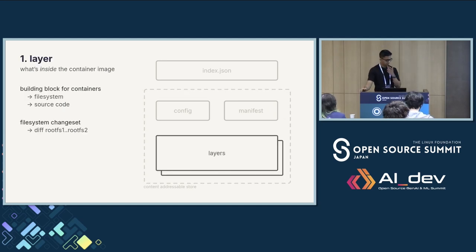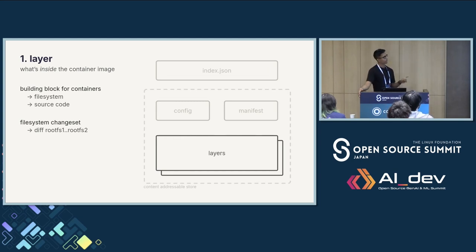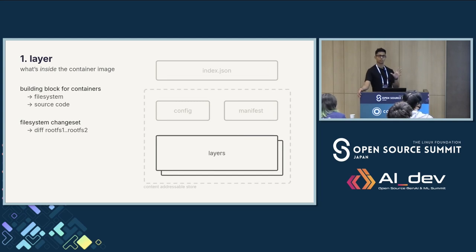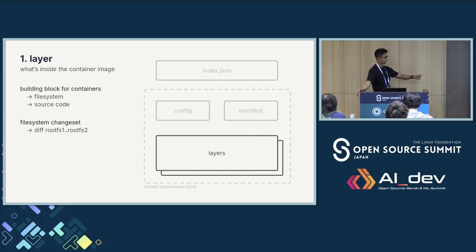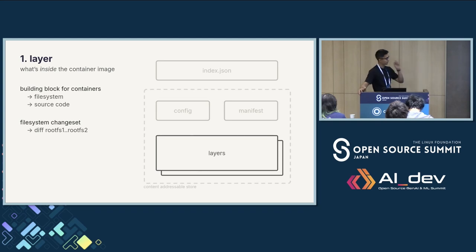Let's start with layers. Pretty much everybody has heard about layers, and when you ask somebody what a container image is, it's very common to hear that a container is made up of different layers. But what really is a layer? Loosely defined, a layer is basically what defines what's inside your container — things like the container filesystem, your source code, your startup scripts, or when you do a package install inside your container. All of these are part of layers. More technically defined, a layer is a filesystem changeset — you have two filesystems, take a diff of them, and that is what a layer is.